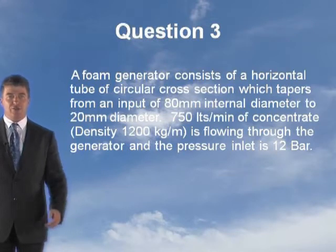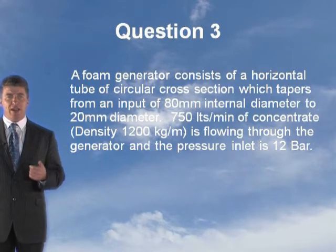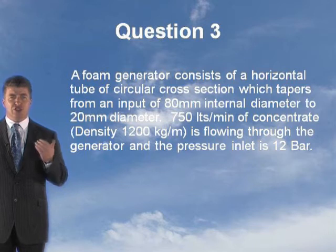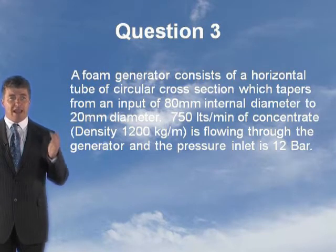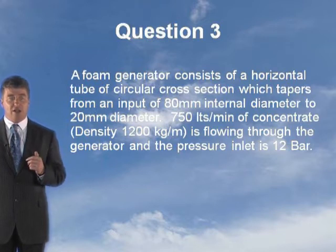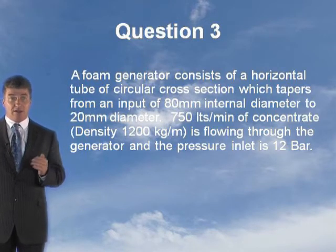Let's go through another question. Question 3. A foam generator consists of a horizontal tube of circular cross-section which tapers from an input of 80mm internal diameter to 20mm diameter.